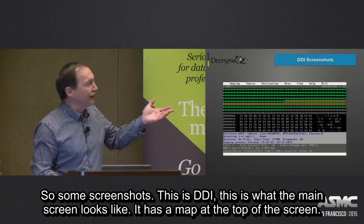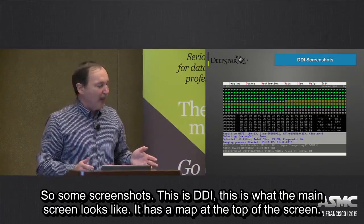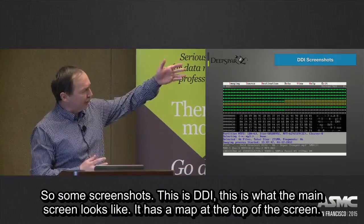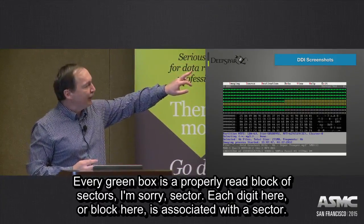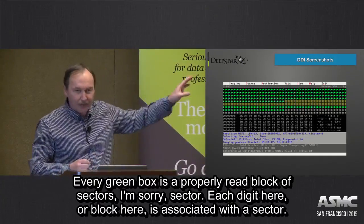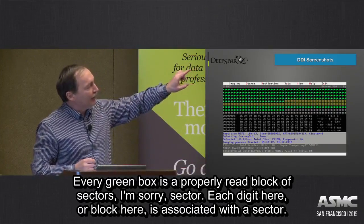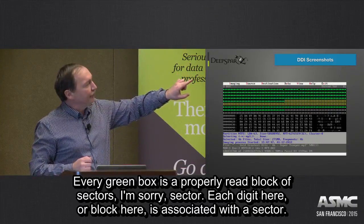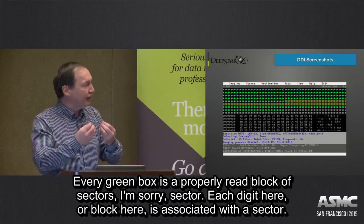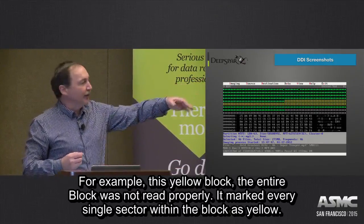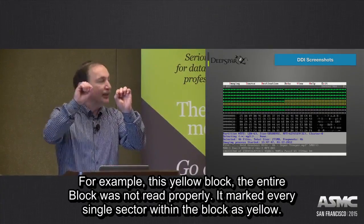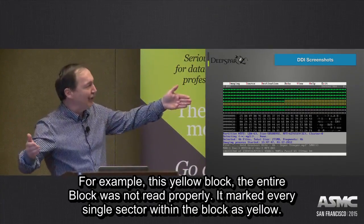So some screenshots. This is DDI — this is how the main screen looks. It has a map on the bottom, on the top of the screen. Every green box is a properly read block of sectors. Each digit or block here is associated with a sector. So for example, this yellow block — this was the entire block that wasn't read properly, and it marked every single sector within that block as yellow.